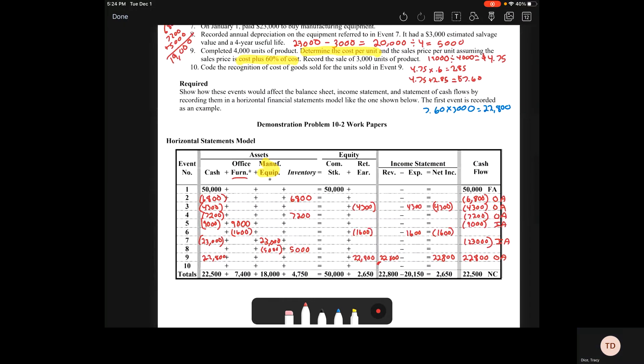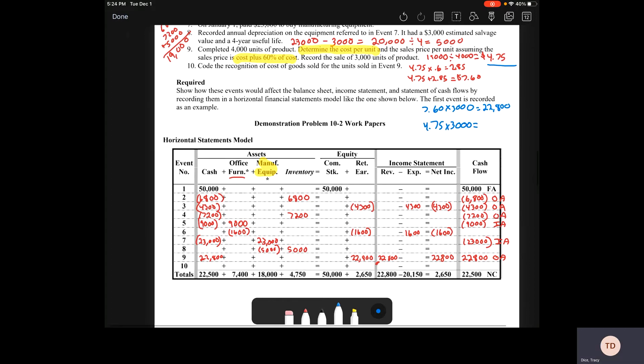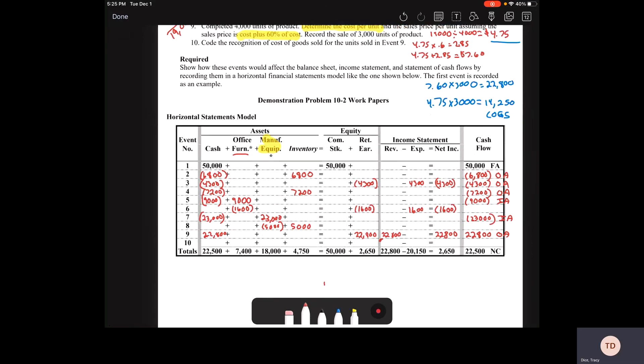The last thing. Code the recognition of cost of goods sold for those sold in event nine. That means we got to go back and take that $4.75 because that's our cost per unit. $4.75 times the 3,000, and we should end up with $14,250. So that's my cost of goods sold. We need to bring it down here.